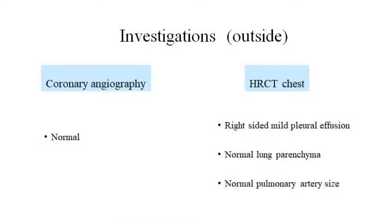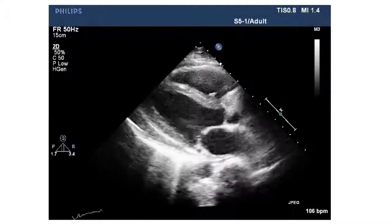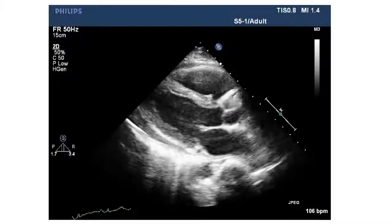Outside, he underwent a host of investigations including coronary angiography — because of suspicion of coronary artery disease given the circumflex and RCA lesion findings — which was not surprisingly found to be normal. An HRCT chest was done; the lung parenchyma was normal, there was some right-sided mild pleural effusion, and the pulmonary artery had a normal size. The patient finally came to us and we got another echocardiogram done.